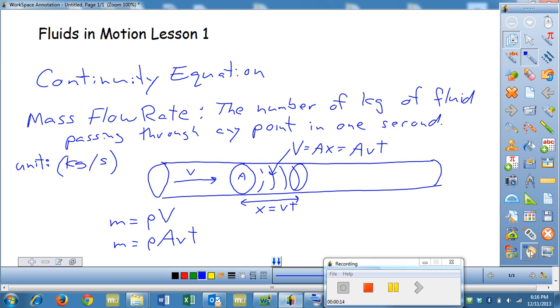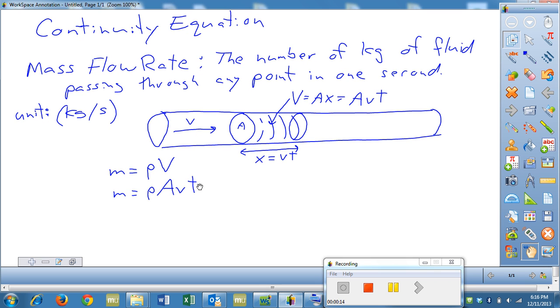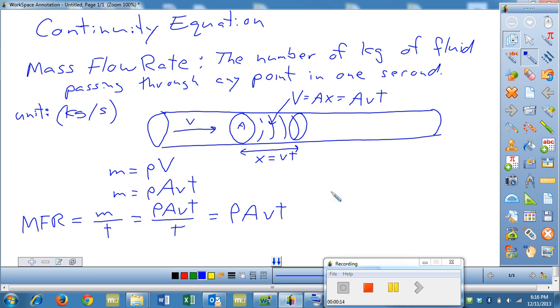So that's going to be the mass is the density times the cross-sectional area times the velocity times the time. Now, I told you that the mass flow rate is the rate of mass, how many kilograms per second go through. So, in fact, the mass flow rate is going to be the mass that passes through past any point, divided by the amount of time that it spends. That's the rate, kilograms per second. So, we have ρAVT over T. The T's cancel, and we have ρAVT. So, that's our mass flow rate.